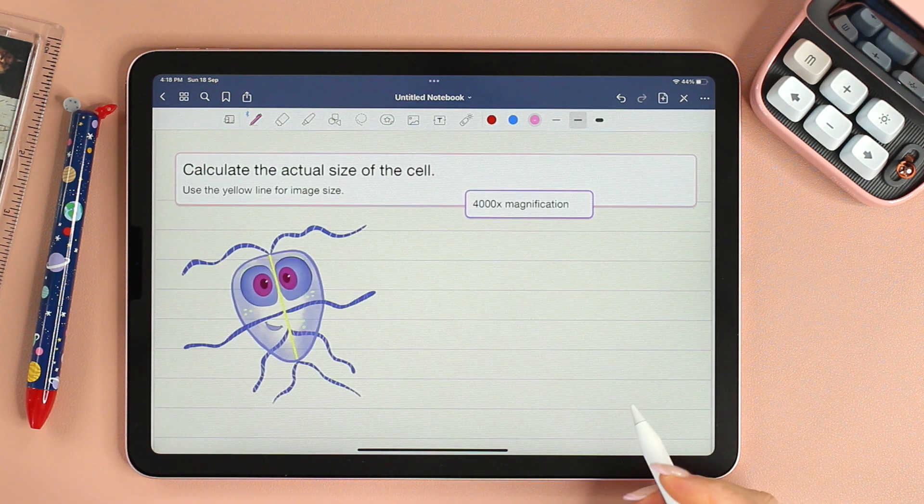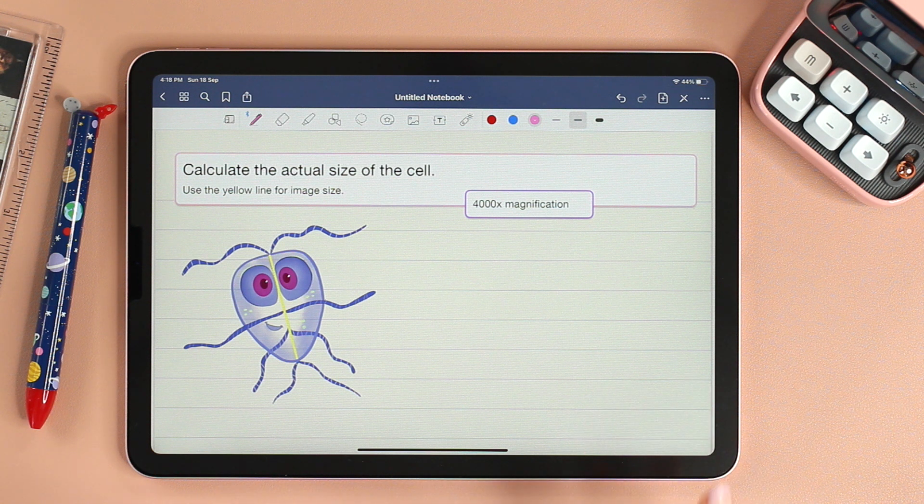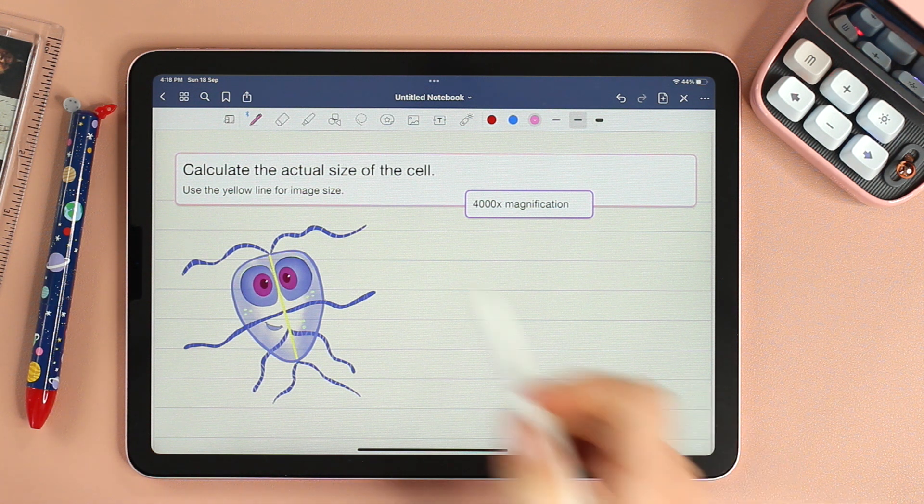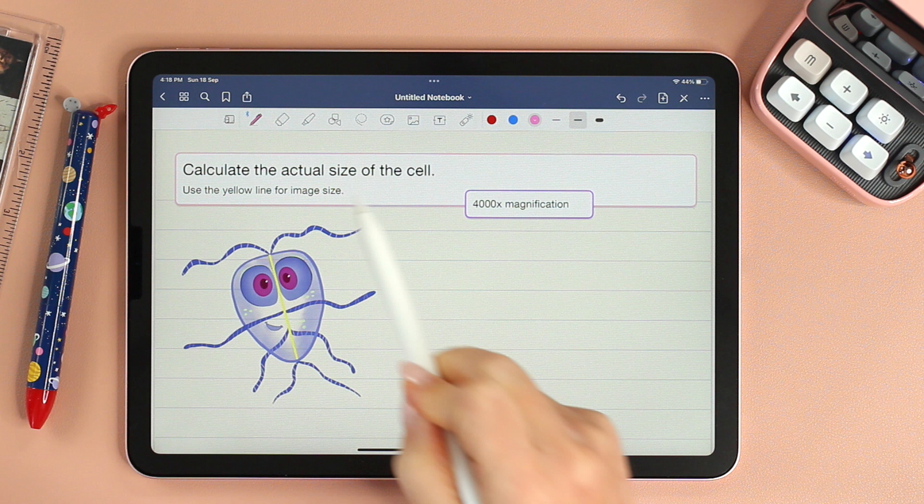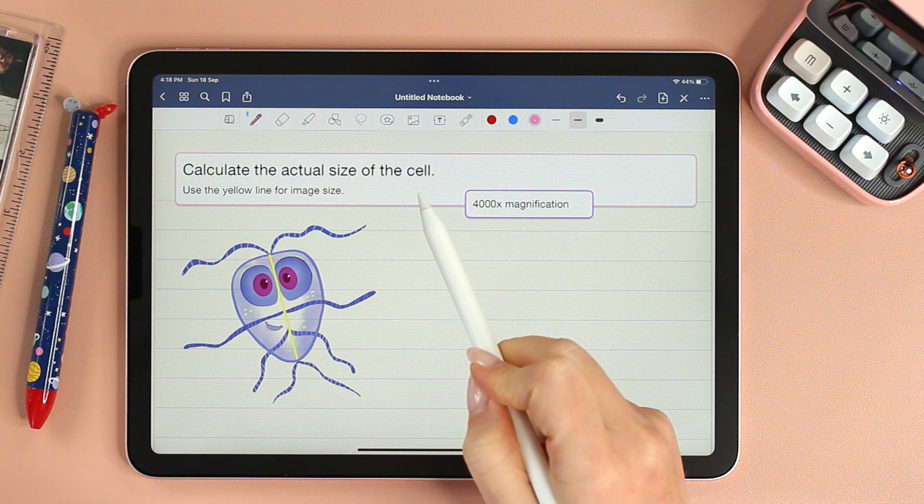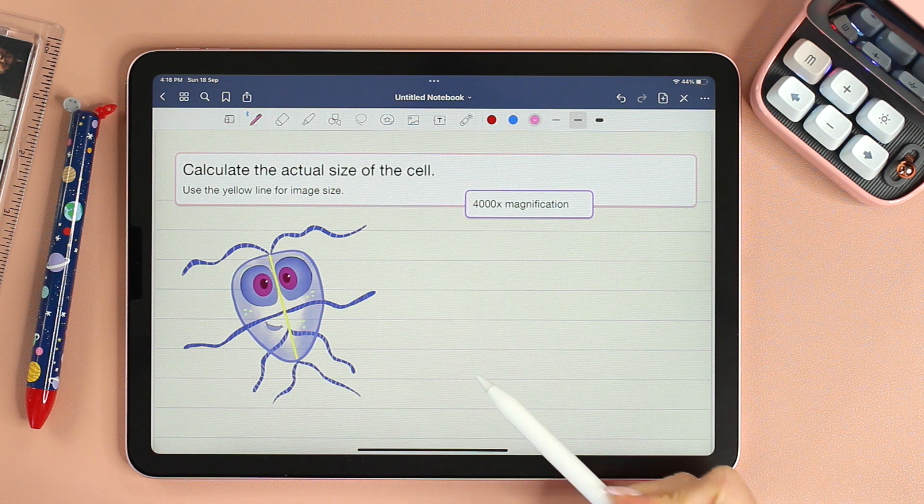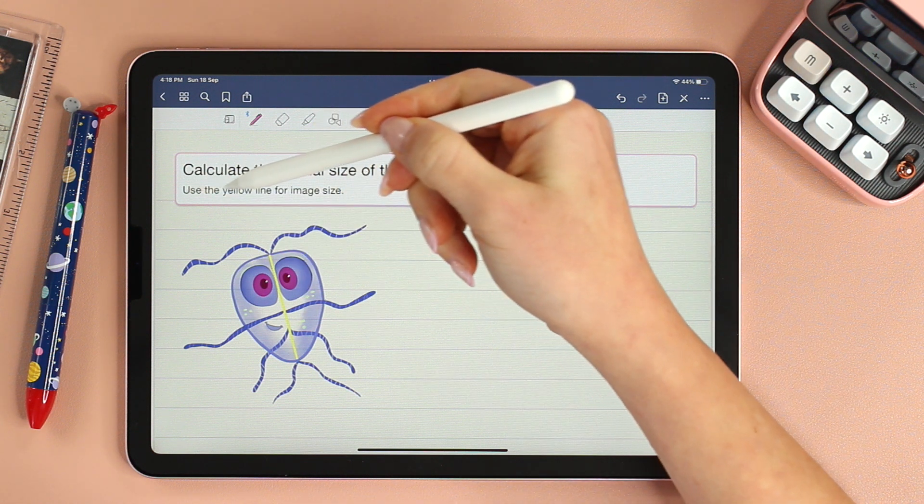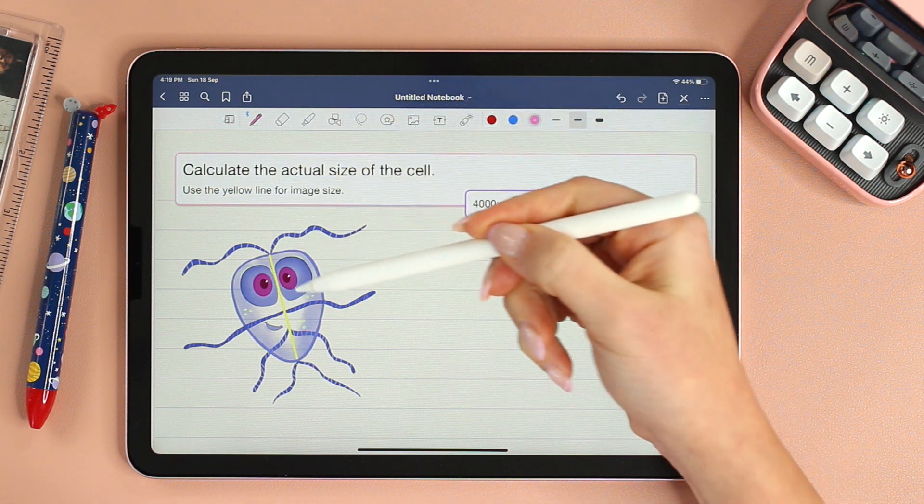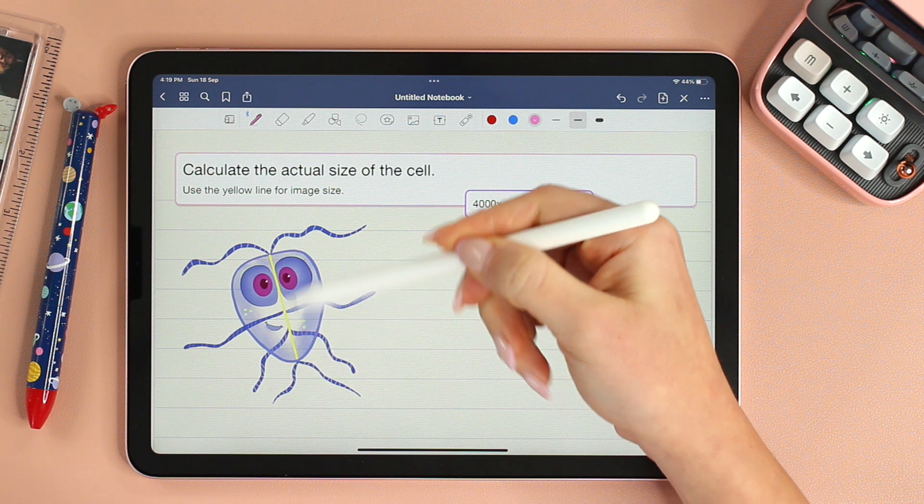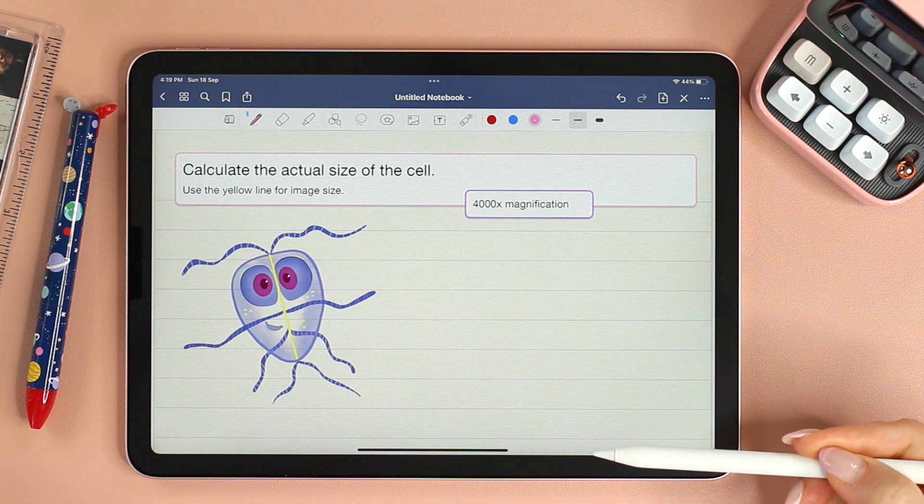Now the second question differs in two things. First of all, we are required to calculate the actual size of the cell. And second, we don't have a scale bar. It says use the yellow line for image size, so we're going to use this yellow line for finding the size of the image.